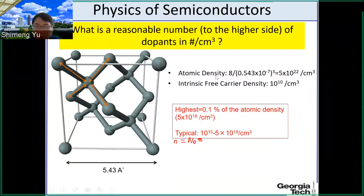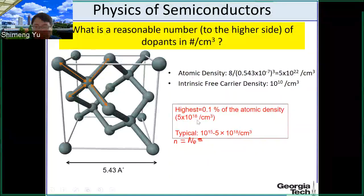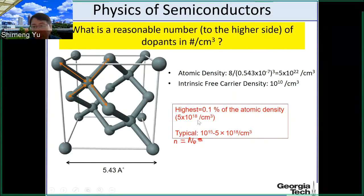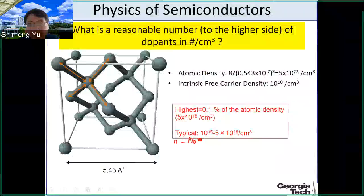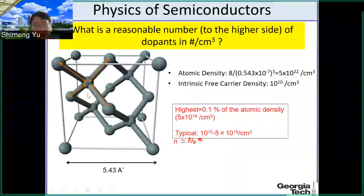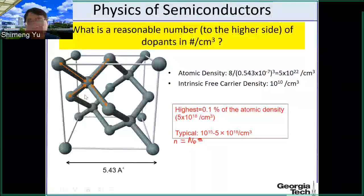At the high end of doping — for example 5 times 10 to the power 18 per centimeter cubed — recall the atomic density is 5 times 10 to the power 22. The ratio shows that about 0.1% of silicon atoms are replaced by phosphorus atoms. At this level you can still maintain the crystal structure — you are just replacing silicon atoms with phosphorus atoms. If you dope further beyond this, you can no longer maintain the crystal structure and the material becomes more like an alloy.